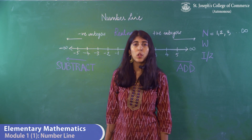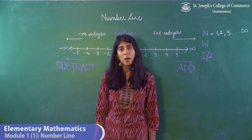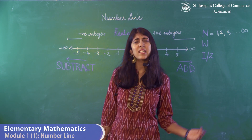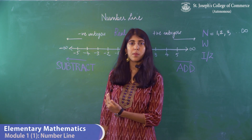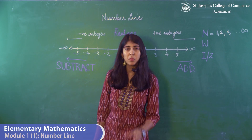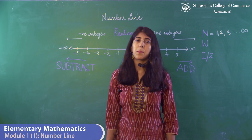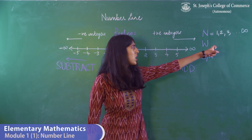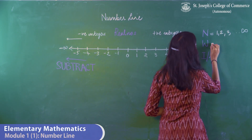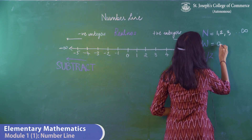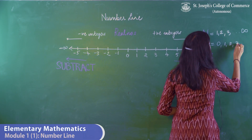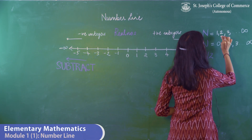The second type of number we're going to look at are whole numbers. Whole numbers are exactly like natural numbers, except they start with the number 0. So whole numbers are represented by the letter W, and they start with 0, and the rest is exactly like natural numbers.